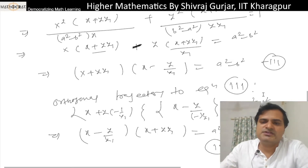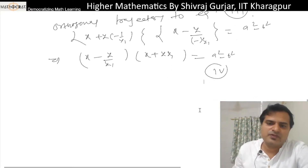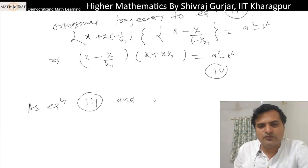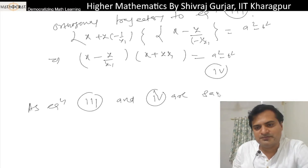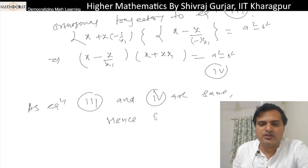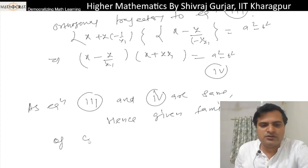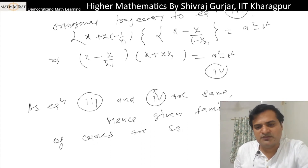We can see that equations 3 and 4 are the same, and hence the given family of curves is self-orthogonal.